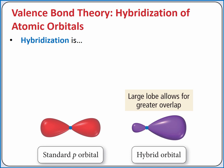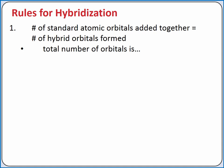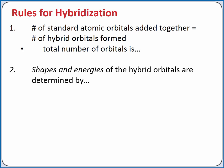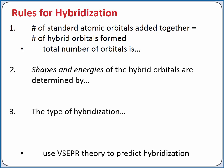These hybrid atomic orbitals have a major lobe and a minor lobe. The major lobe will allow for greater overlap in a bond with another atom. When creating hybrid orbitals, we follow some basic guidelines. First, the total number of orbitals is conserved, so if we add together three standard atomic orbitals, we'll produce three hybrid atomic orbitals. Second, the shapes and energies of the hybrid orbitals produced are determined by the particular combinations of the standard atomic orbitals added together. And third, the type of hybridization that occurs will be the one that yields the lowest overall energy for the molecule. For our purposes, we'll use VSEPR theory to predict what type of hybridization will yield the lowest overall energy.